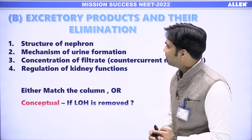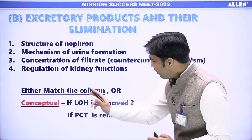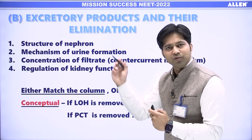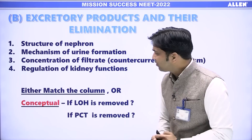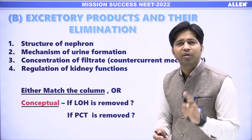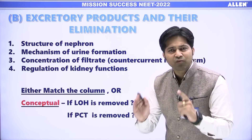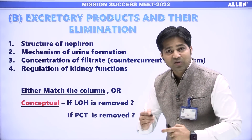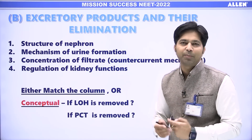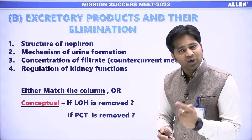Now for the second chapter — Excretory Products and Their Elimination. Mostly two varieties of questions are asked from this chapter: either match-the-column, using structure of the nephron or mechanism of urine formation, or conceptual questions from two subtopics — concentration of filtrate (counter current mechanism) where we concentrate the urine, and regulation of kidney function involving ANF, RAS mechanism, ADH, and myogenic mechanism. Conceptual questions such as 'what happens to the filtrate if the loop of Henle is removed, or if the PCT is removed' are commonly asked. In-depth knowledge of this chapter from the module is strongly recommended.